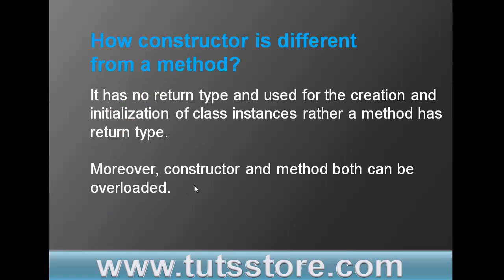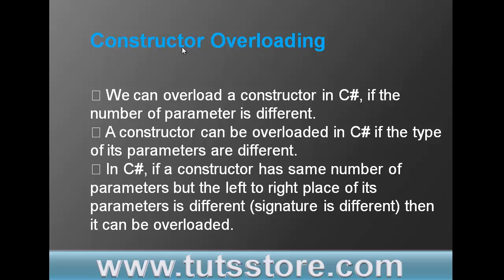Moreover, both constructor and method can be overloaded. For constructor overloading in C#, a constructor can be overloaded if the number of parameters is different, or if the type of its parameters are different. Also, if a constructor has the same number of parameters but the left-to-right placement of its parameters are different — meaning the signature is different — then it can be overloaded.